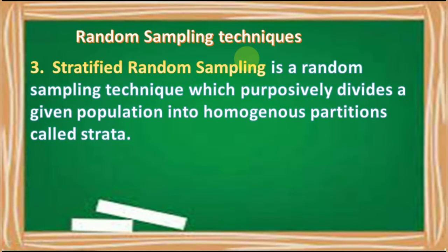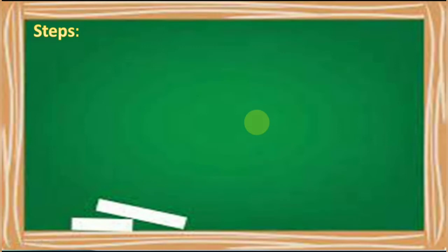The third type of random sampling technique is the stratified random sampling, which is a random sampling technique which purposefully divides a given population into homogenous group or partition called strata. Let's have the steps.